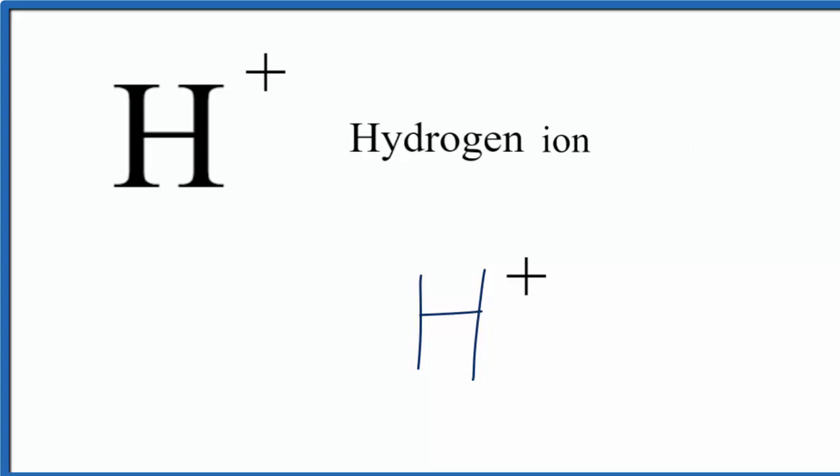And since we lost that electron, that's what makes it positive, we just have H+, and that's the Lewis structure for the hydrogen ion.